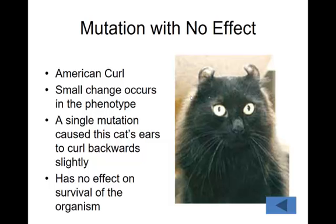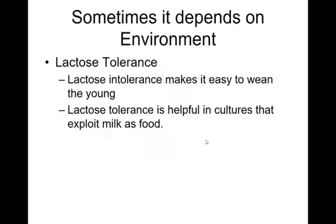Sometimes mutations don't matter at all. For example, the American curl in cats — this is a very small change in phenotype that makes these cute curled cat ears, but it doesn't really affect how these cats survive in their environment or whether or not they're able to reproduce.